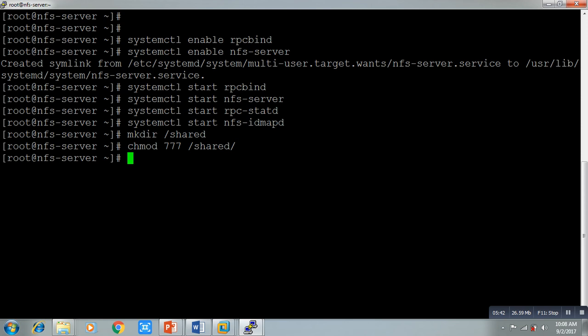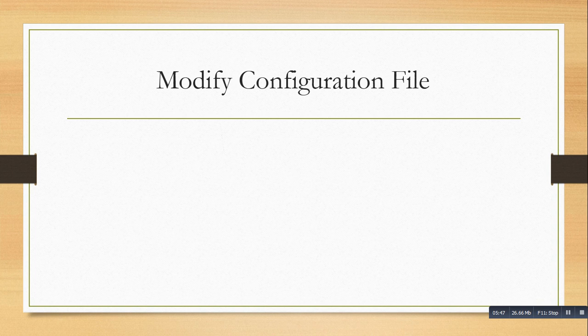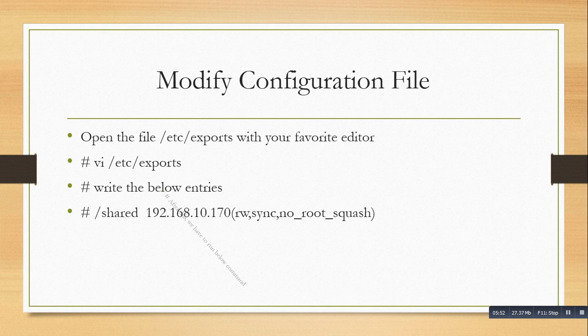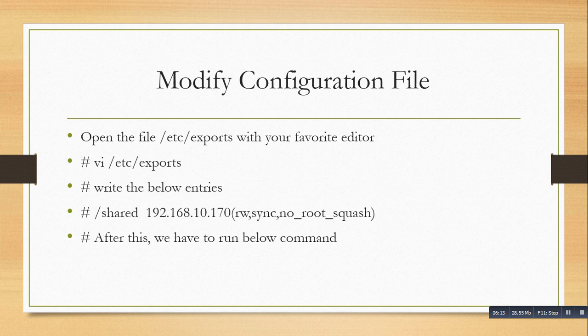Now we have to modify the configuration file — the /etc/exports file. Open it in your favorite editor and write the following entry: `/share  <client_IP>(rw,sync,no_root_squash)`. The path /share is the directory we want to share. The IP address is the client IP address of who wants to access it — you can also give a hostname or a complete network. The option `rw` means read-write permission.